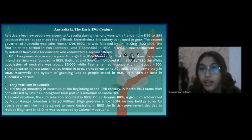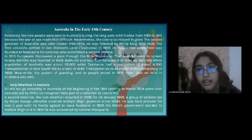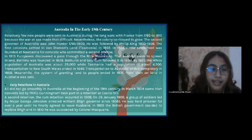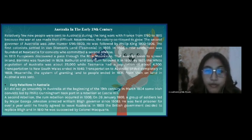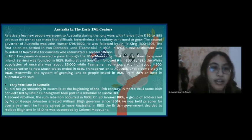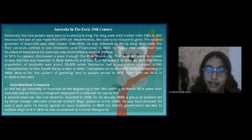In 1804, a new settlement was founded at Newcastle for convicts who committed a second offence. In 1813, Europeans discovered a pass through the Blue Mountains that enabled them to spread inland. By 1825, the white population of Australia was about 25,000, while Tasmania had a population of about 4,500. Transportation to New South Wales ended in 1840, and transportation to Australia ended completely in 1868. Meanwhile, the system of granting land ended in 1831, and from then on, land in Australia was sold.